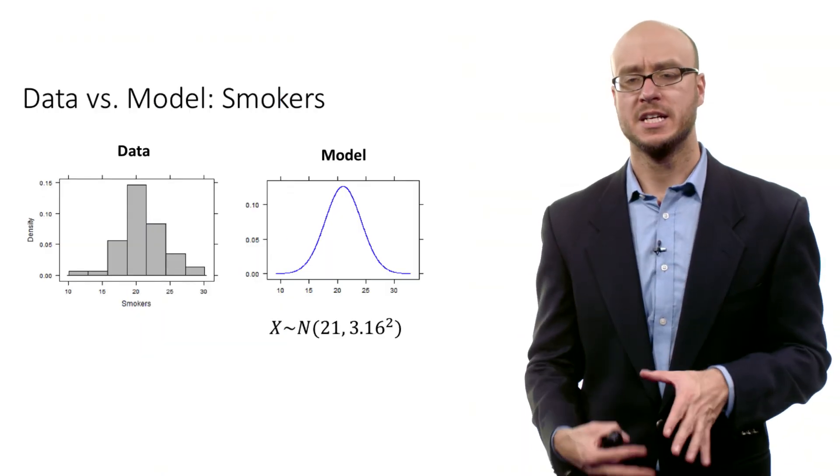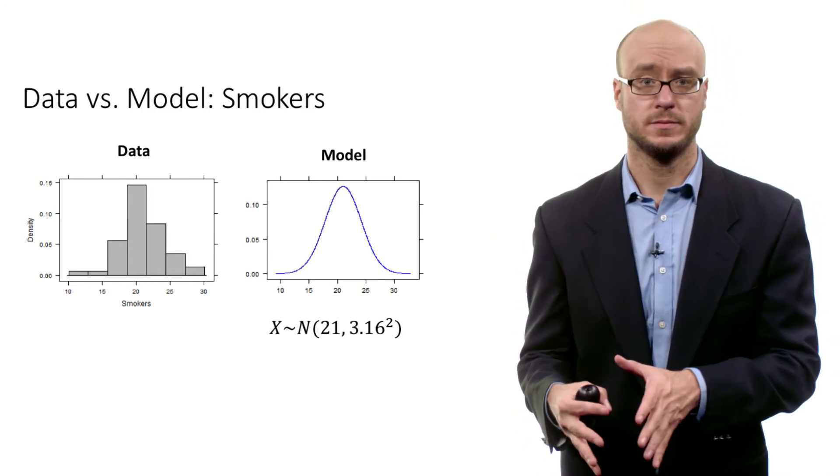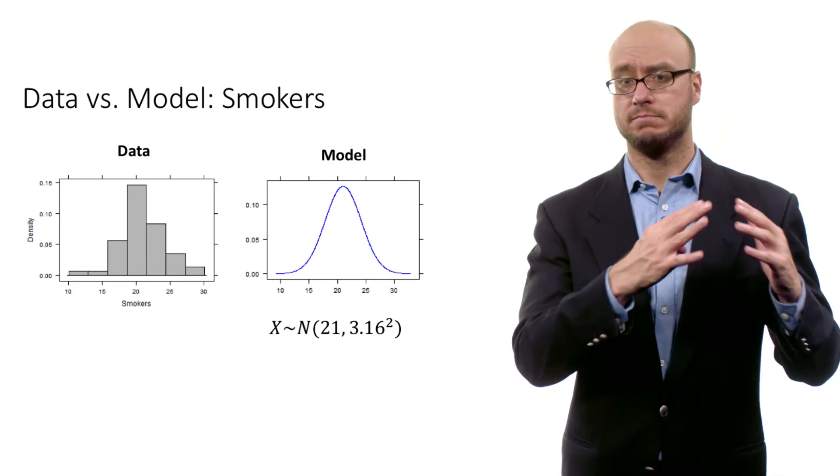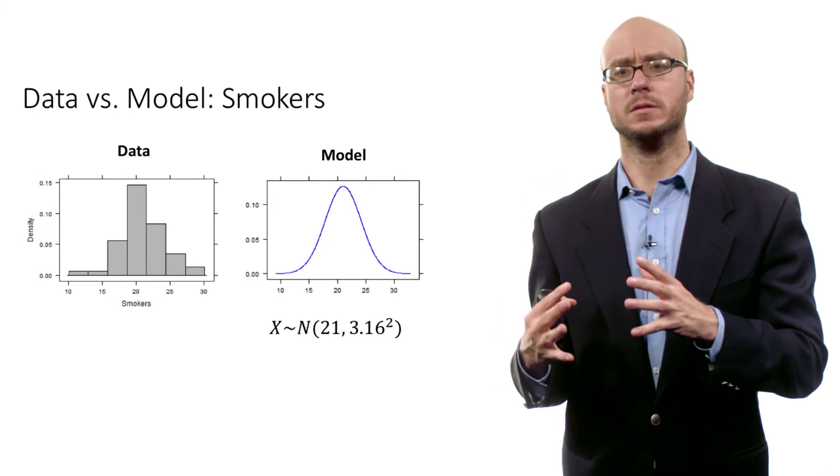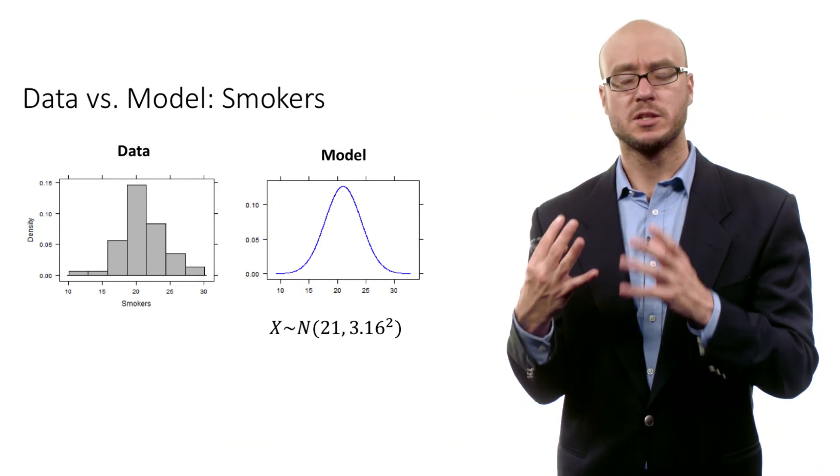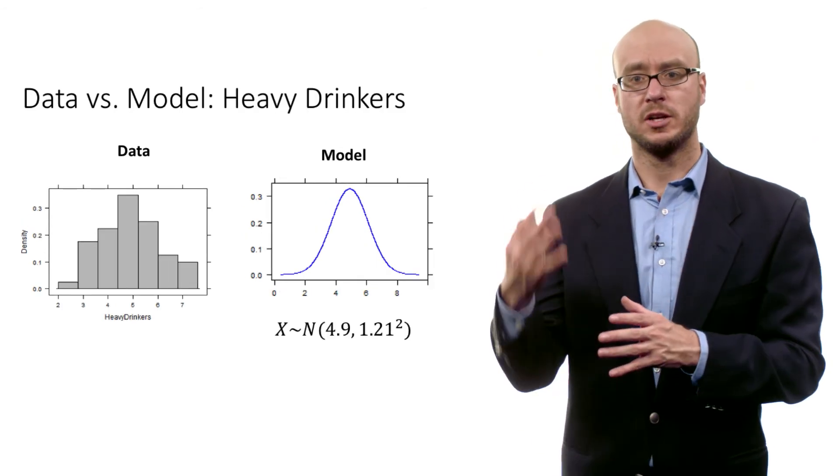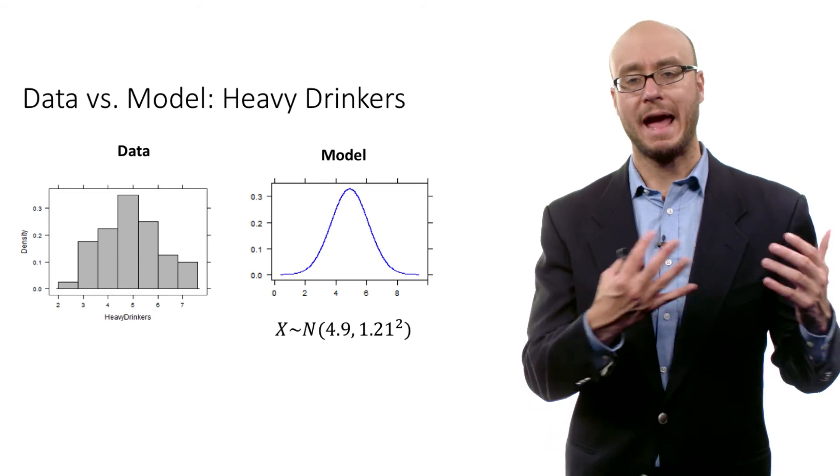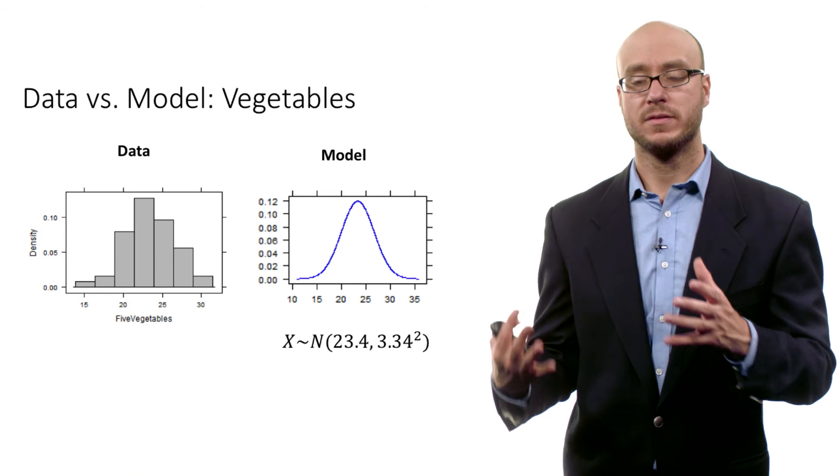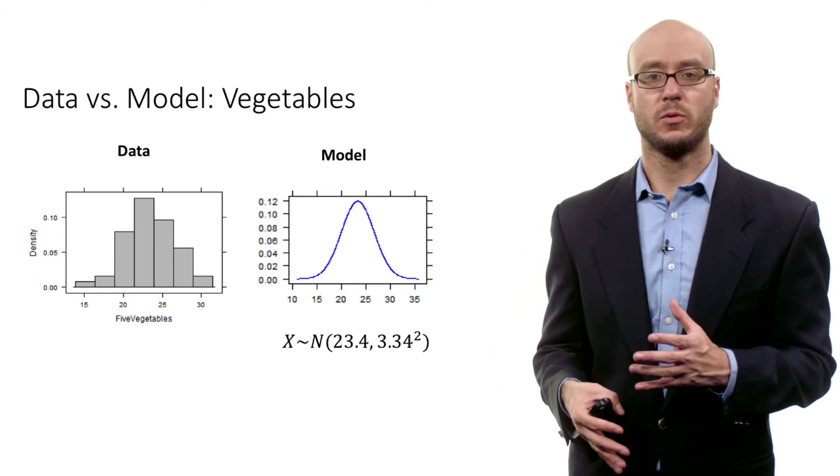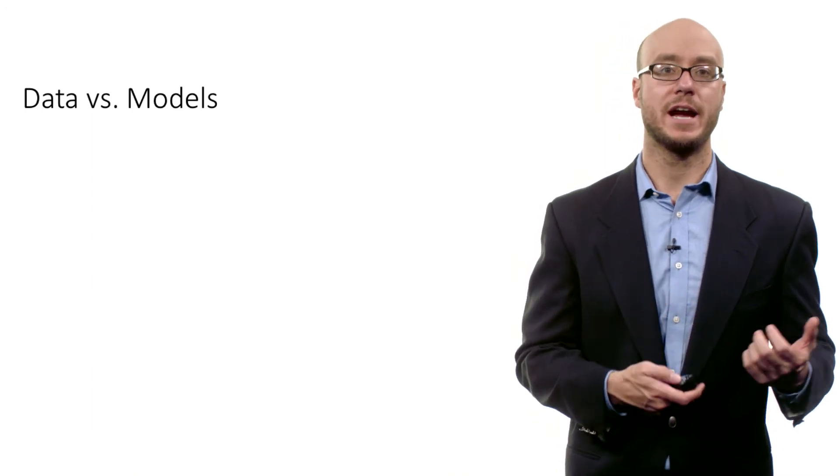The important point is that this is a model. The normal distribution is a model. The data, it's messy. Sometimes above, sometimes below. But as a model, it's a rough approximation, but it's approximately true. Here's the heavy drinkers. We have a model, centered on 4.9%, and we have the data, the histogram. And then for vegetables and fruits, we have a model, centered on 23.4%, and then we have the data. We have an approximation, and we have the actual data.